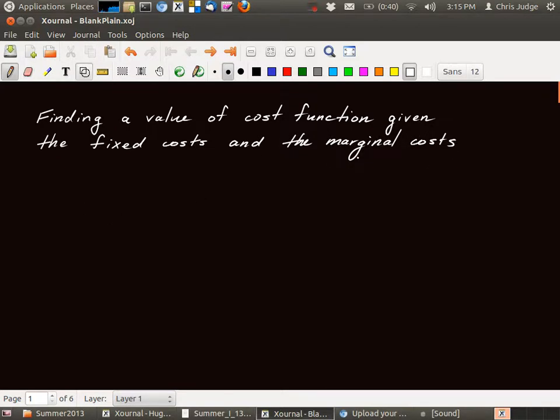In this problem, we're going to have some list of marginal costs in the form of a formula, a table, or a graph. Let's imagine that we have a formula in this example. So suppose C prime of Q is equal to some function.